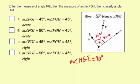So the measure of angle FGI is 45 degrees, so is the measure of angle FGH. And the classification for HGI is a right angle. So that's going to be this one.